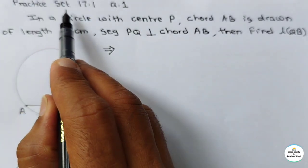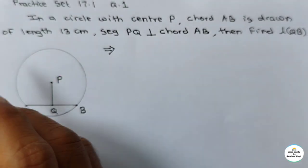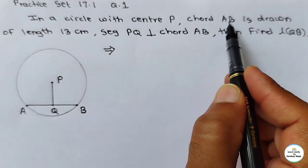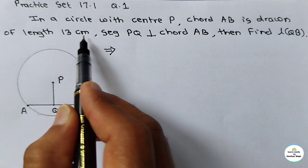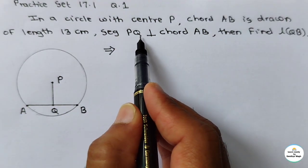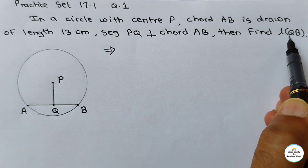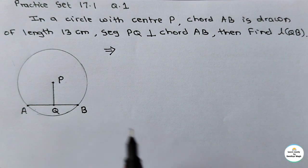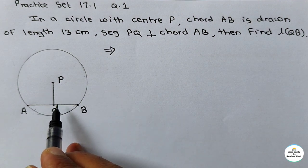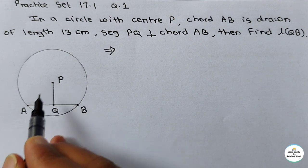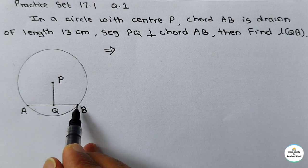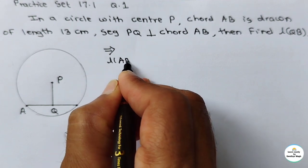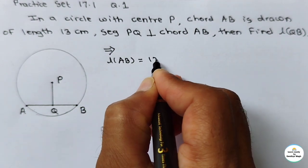See question number 1 for practice set 17.1 class 8 mathematics. The question is: in a circle with center P, chord AB is drawn of length 13 cm. Segment PQ is perpendicular to chord AB. The length AB, that chord length, is given as 13 cm.